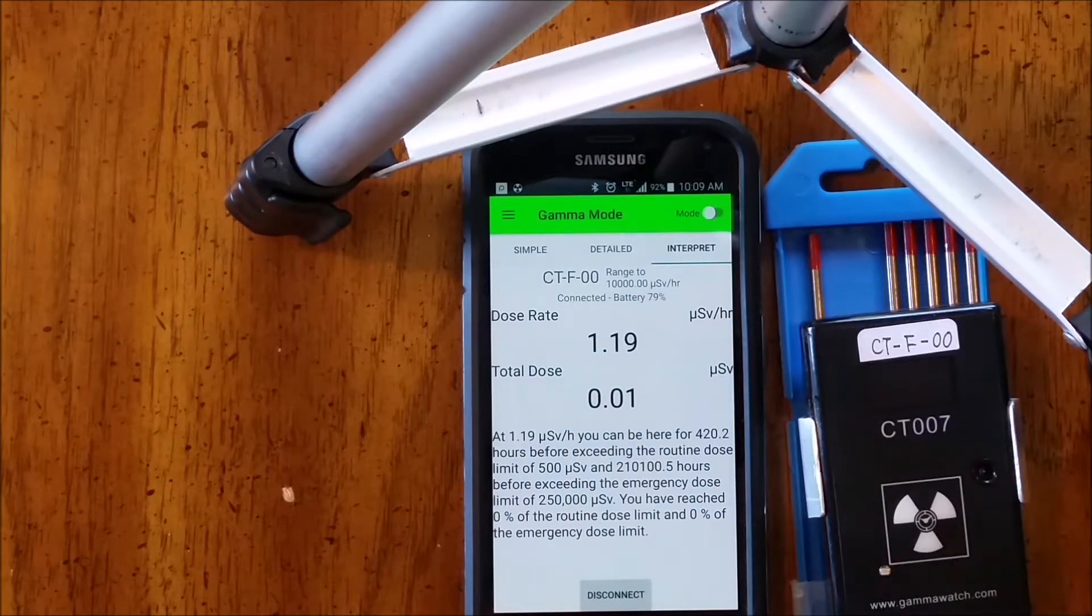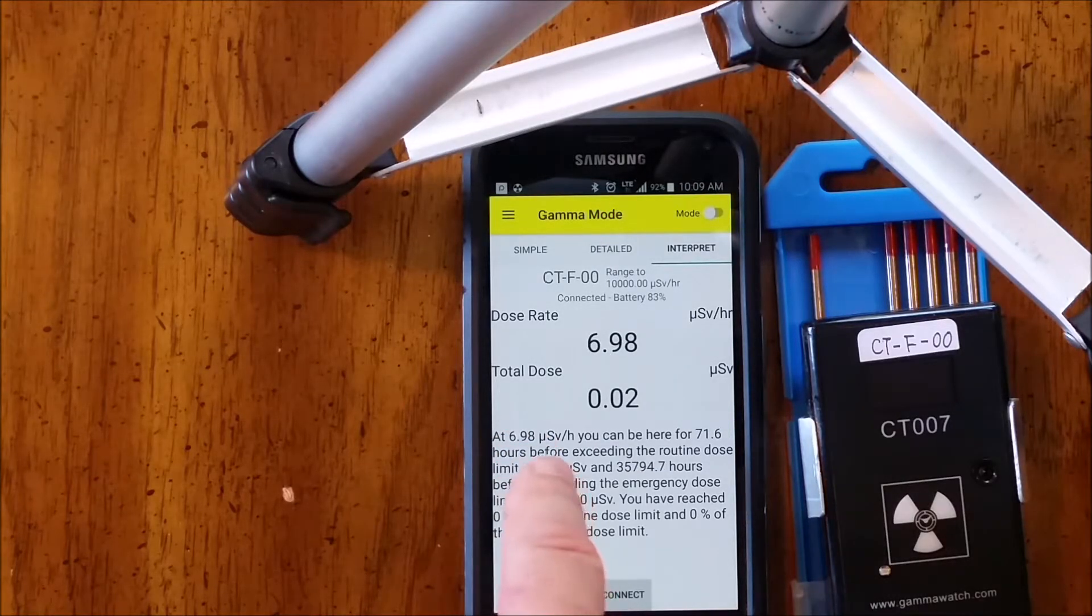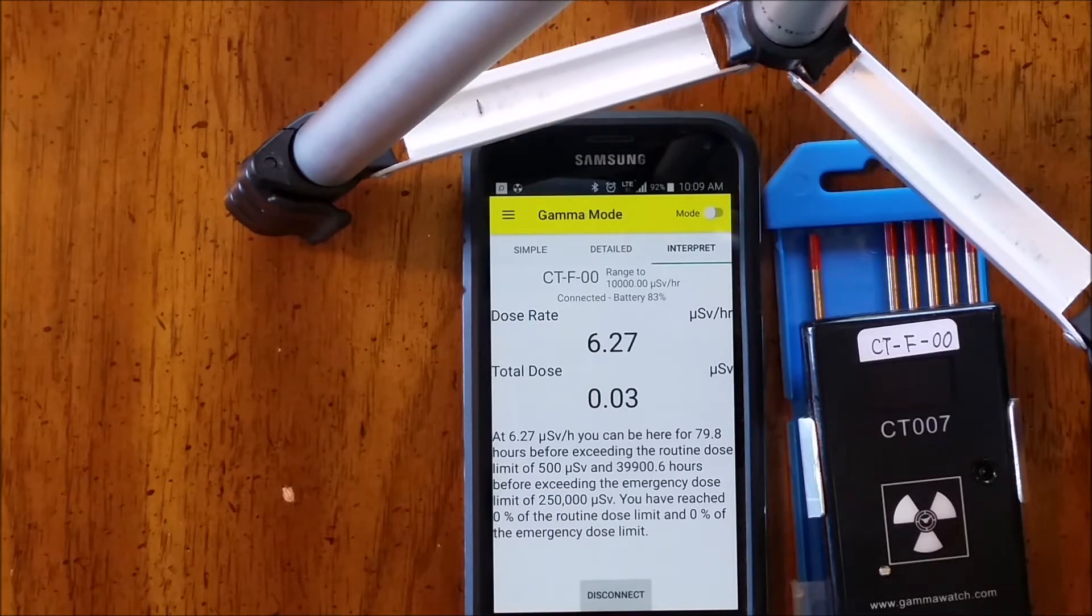Take rods. And what this is telling me is that at this particular dose rate, we can be here for about 80 hours before exceeding our routine dose limit. And we can be here a lot longer at that dose rate if this was an emergency.